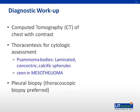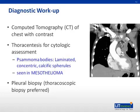Malignant pleural mesothelioma typically presents with chest pain usually associated with pleural effusion. Cough, dyspnea, weight loss, fever, and malaise are common. CT scanning is the primary imaging modality used for diagnosis and staging. Findings include irregular nodular pleural thickening or masses with effusion. Invasion occurs locally along the pleural cavity. As the disease progresses, the lung parenchyma, mediastinal and hilar lymph nodes may be involved, along with pericardial thickening or effusion, abdominal extension, and chest wall invasion.